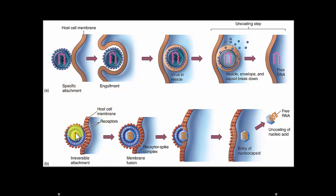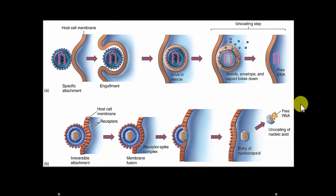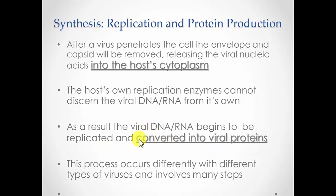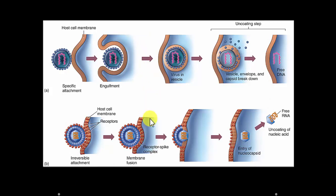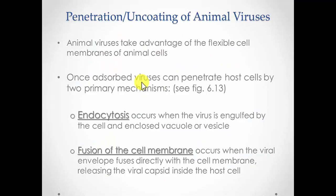In fusion of the membrane, the envelope fuses and the capsid is released free of the envelope right into the cell. As the virus comes in, it loses its envelope, the capsid breaks down, and the RNA is released into the cell. Be able to recognize which mechanism is being shown from a figure, and recognize the description of each and what's happening.